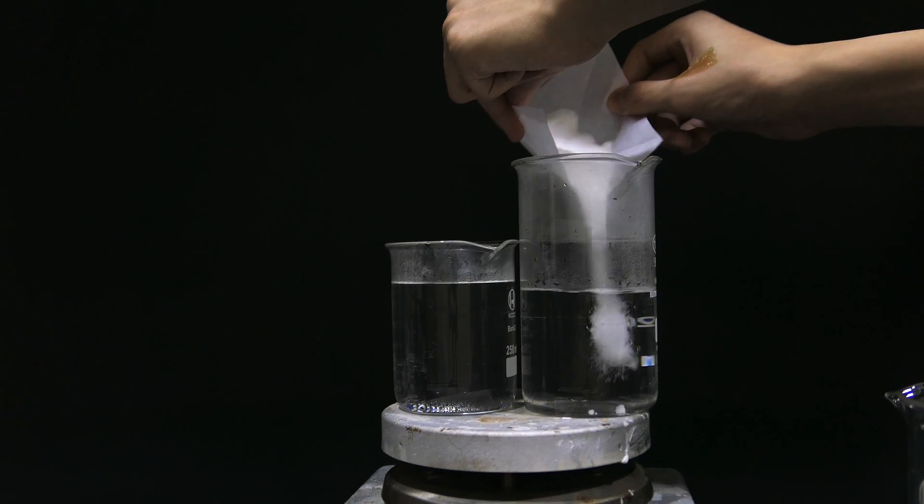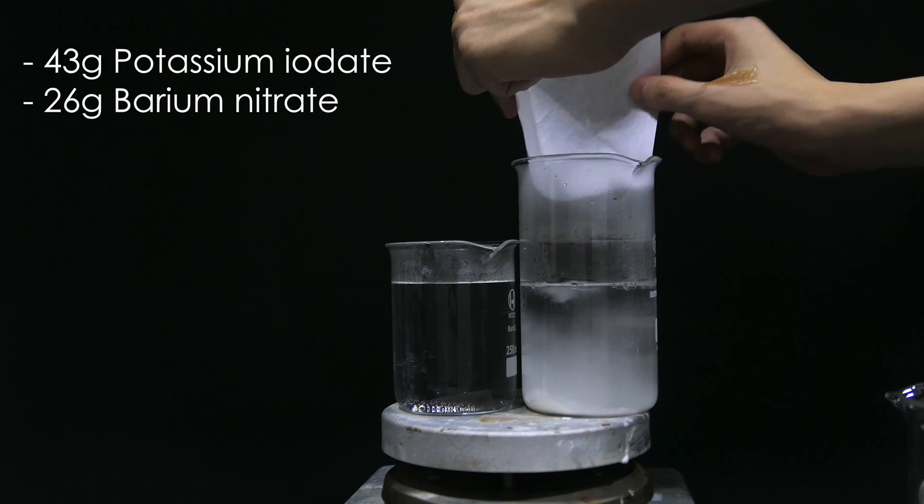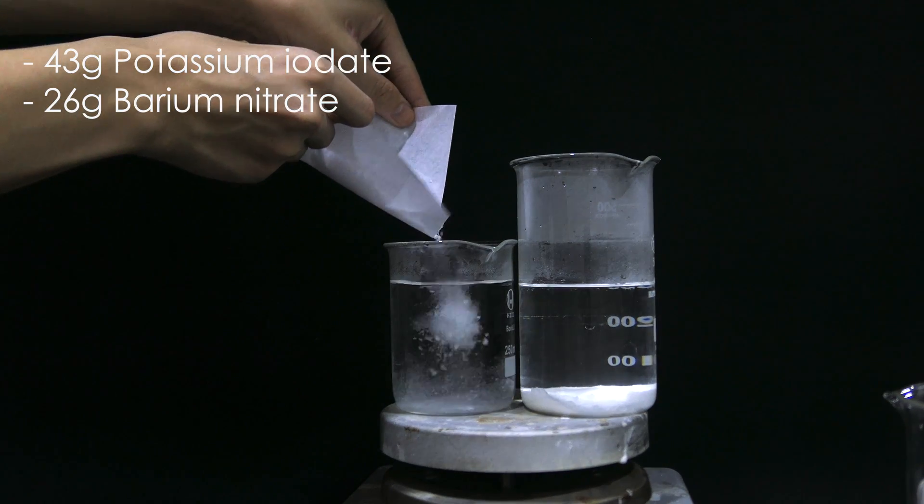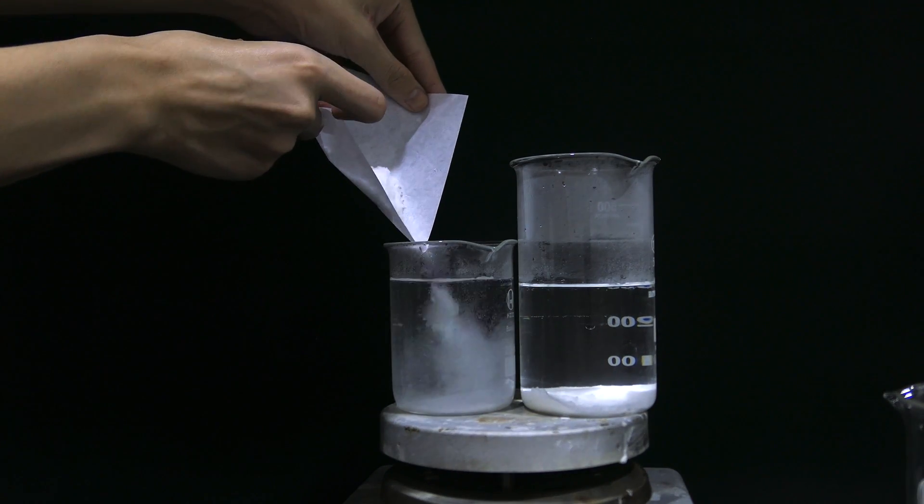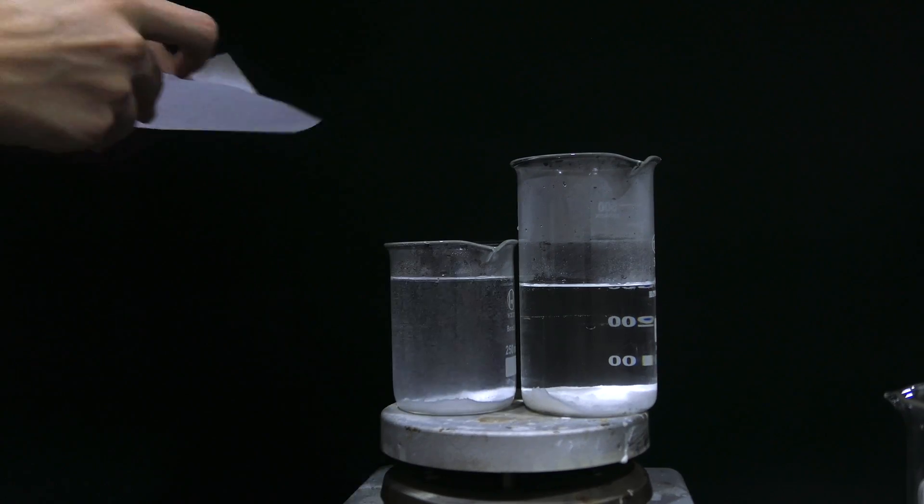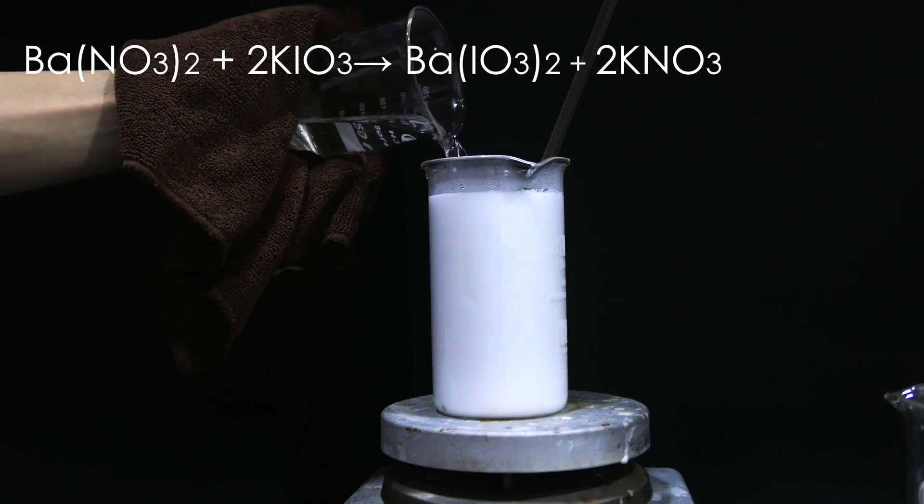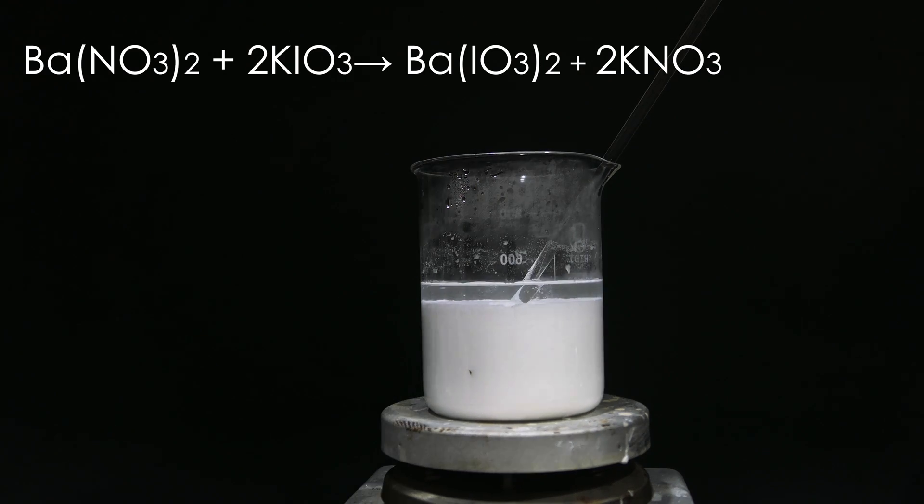And for the following step, I dissolve 43 grams of potassium iodate and 26 grams of barium nitrate separately, each in 250 mL of boiling water. Then add the two solutions together while boiling and allow it to cool. Then filter out the barium iodate.